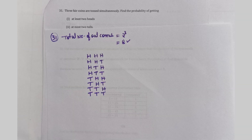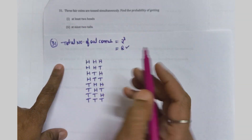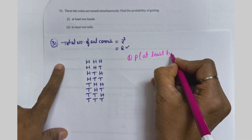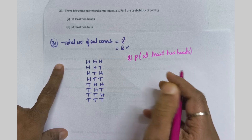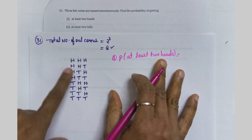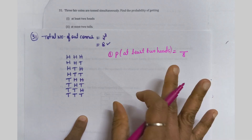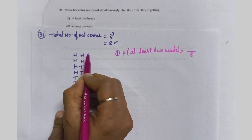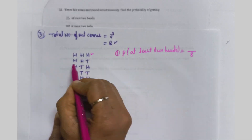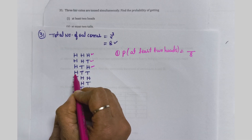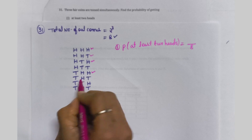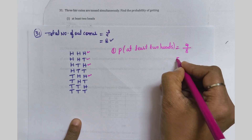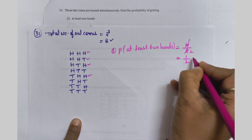Now the question asks: what is the probability of getting at least 2 heads? Total outcomes are 8. At least 2 heads means we need 2 or more heads. Looking at the outcomes: 3 heads - yes; 2 heads - yes; 2 heads - yes; 1 head - no; 2 heads - yes; 1 head - no; 1 head - no; 0 heads - no. So there are 4 favorable chances. The answer is 4 by 8, which simplifies to 1 by 2.